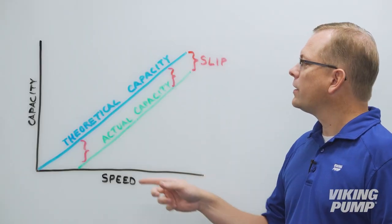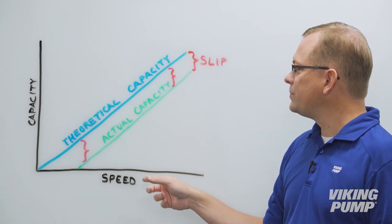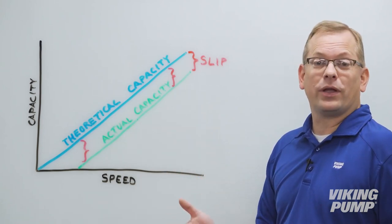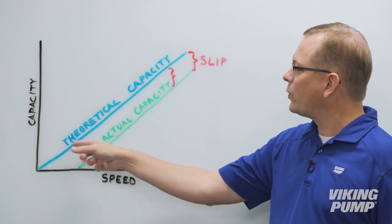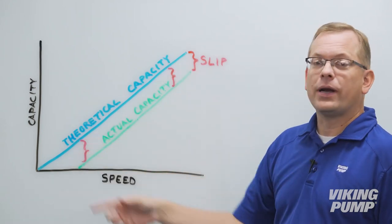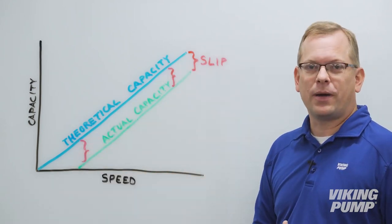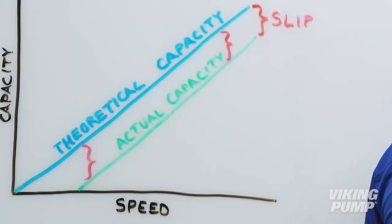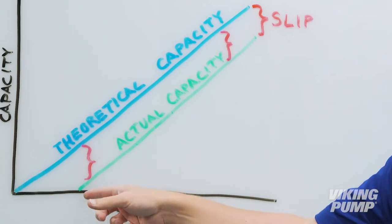So here I've made a chart of capacity versus speed. Using the equation of displacement times speed equaling the theoretical capacity, we end up with a line that runs through zero, that is the theoretical capacity for a positive displacement pump. When we subtract slip, we can see that the actual capacity runs parallel to that, but does not cross through zero.